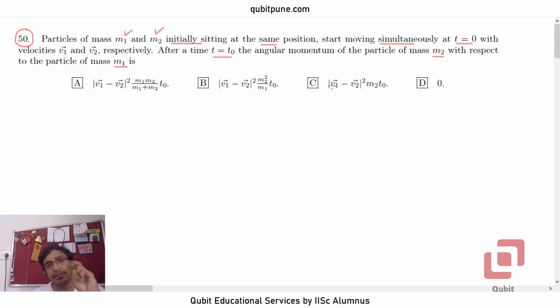We want the angular momentum of second particle relative to the first particle. So it is l21 bar. The formula for angular momentum is l bar is r bar cross p bar. So in this case, it will be r21 bar cross p21 bar.